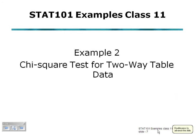Stat 101 examples, class 11, example 2. This time looking at chi-square test for a two-way table, so two-way table data.